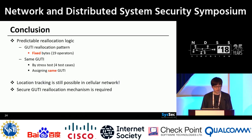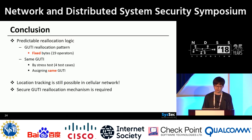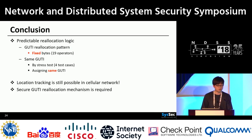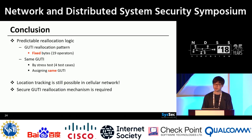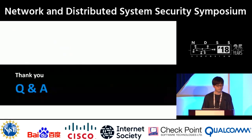Despite previous warnings that insecure temporary identifiers may break location privacy, the current GUTI reallocation procedure is insecure. 19 of 28 carriers worldwide fixed a few bytes in GUTI, and the four carriers we revisited were vulnerable to stress testing. From these vulnerabilities, location tracking is also possible in cellular networks. We also propose a lightweight secure GUTI reallocation solution in our paper. Thank you.